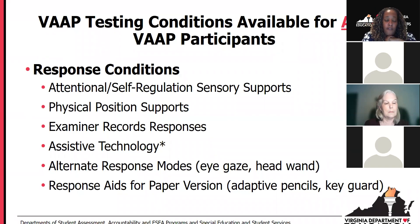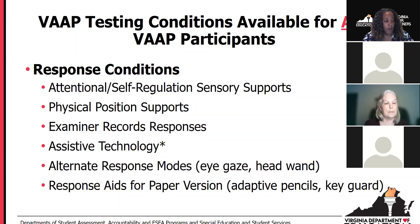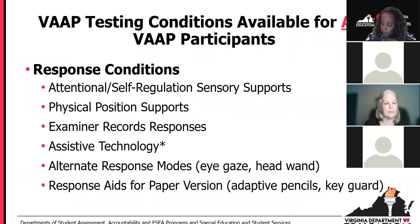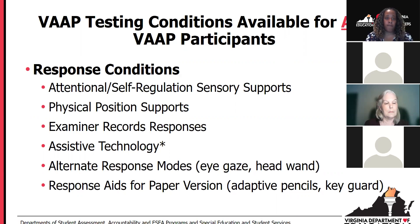Response conditions include intentional and self-regulation supports, sensory supports, physical position supports, and examiner records responses — the student would respond through whatever their communication modality would be, whether verbal, pointing, or otherwise indicating through assistive technology. Students may have to respond verbally, point, or otherwise indicate their response through whatever communication modality they use — assistive technology, alternate response modes, and response aids for paper versions such as adaptive pencils or key guards. Assistive technology — any device serving as their primary mode of communication, any piece of equipment, product, or system used to improve their capabilities based on their disability — is also considered a condition.